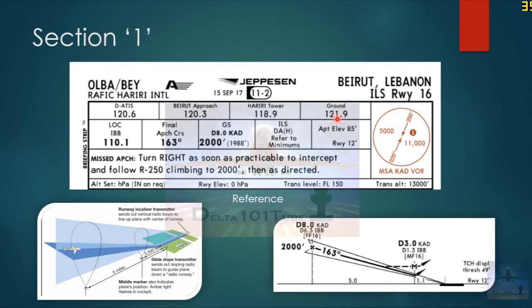On the right, what you see is called the MSA, the minimum sector altitude. Minimum sector altitude or MSA is the lowest altitude which may be used which will provide a minimum clearance of 1,000 feet above all objects located in the area contained within a sector of a circle of 25 nautical mile radius centered on a radio navigational aid. Here, the radio navigation aid is the CAD VOR, and this is the 25 nautical mile radius. There are two sectors: on the eastern part you cannot go below 11,000 feet, and here you cannot go below 5,000 feet.